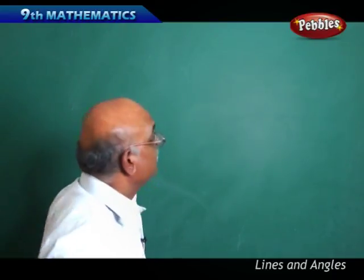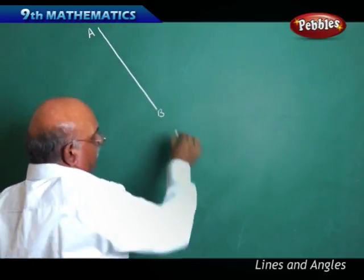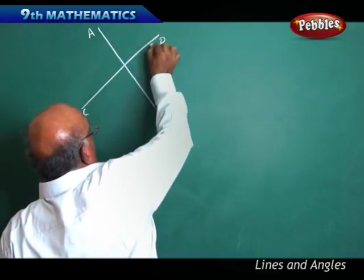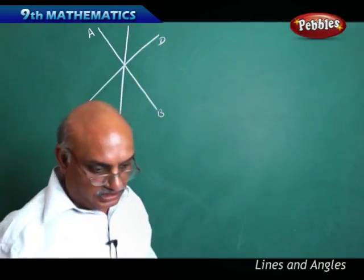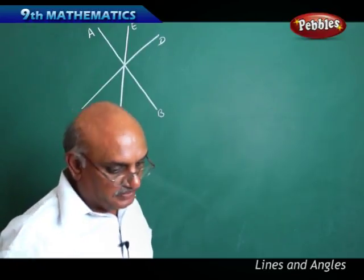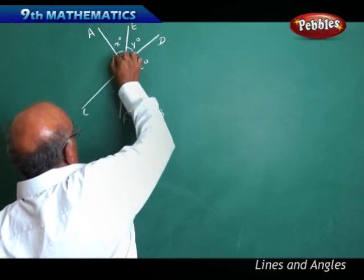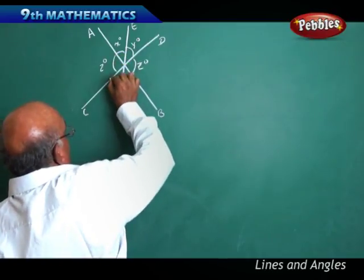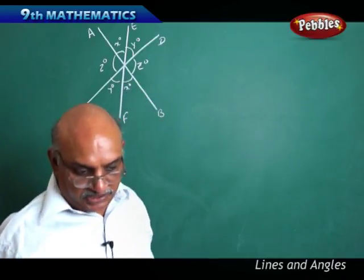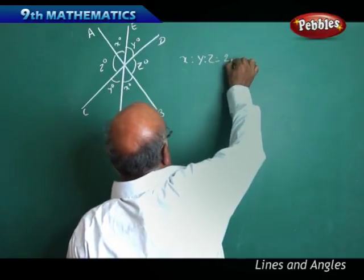We have lines given: line AB, line CD, and line EF. The angles are given as X degrees, Y degrees, Z degrees, Z degrees, Y degrees, and X degrees. The ratio between the angles X to Y to Z is equal to 2 to 3 to 5.